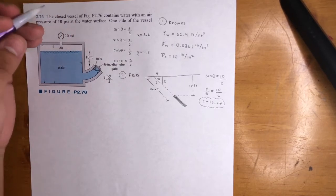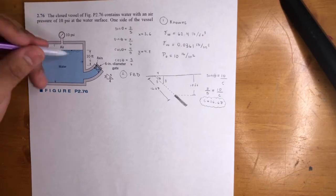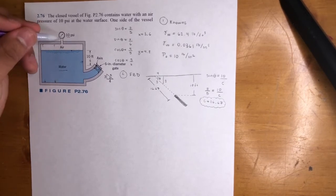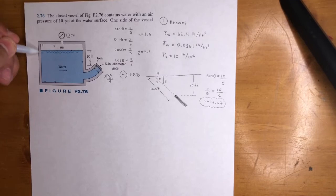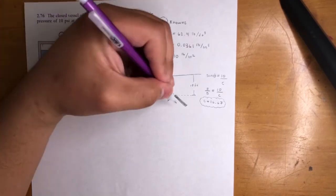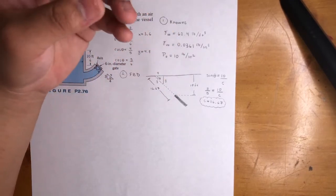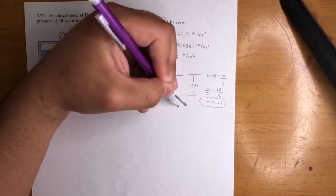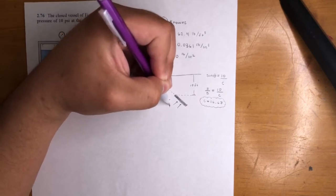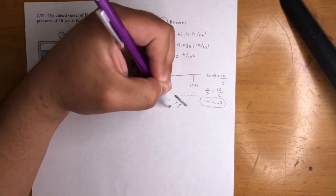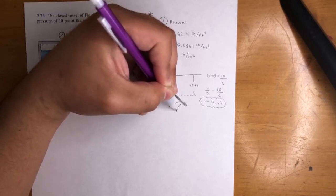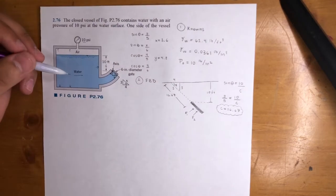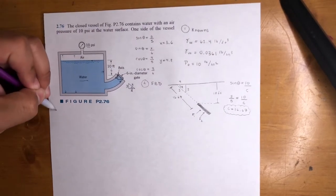There are two forces acting on the gate. F1 is due to the 10 psi air pressure, and F2 is due to water pressure alone.